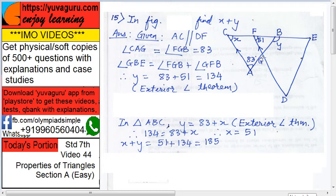Now GBE equals what? FGB plus GFB. GBE equals FGB plus GFB, right? This y equals to this angle plus this angle. Now GBE is y, which is 134. How to find x in triangle ABC?